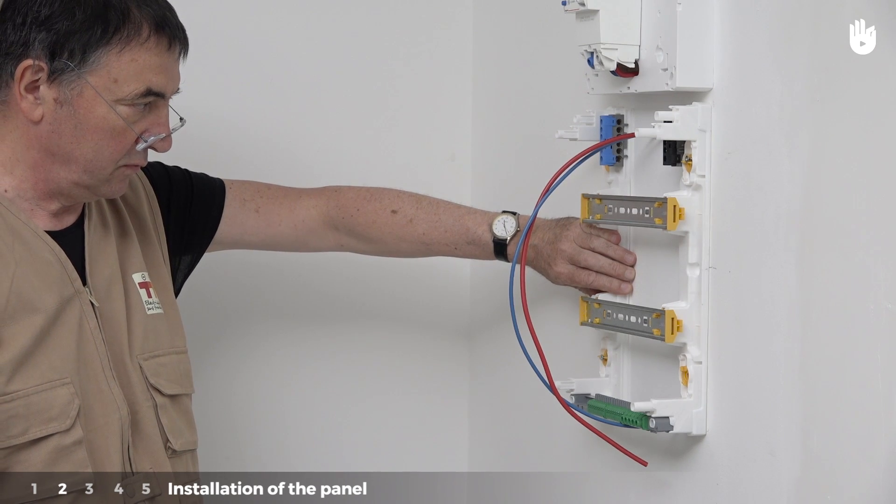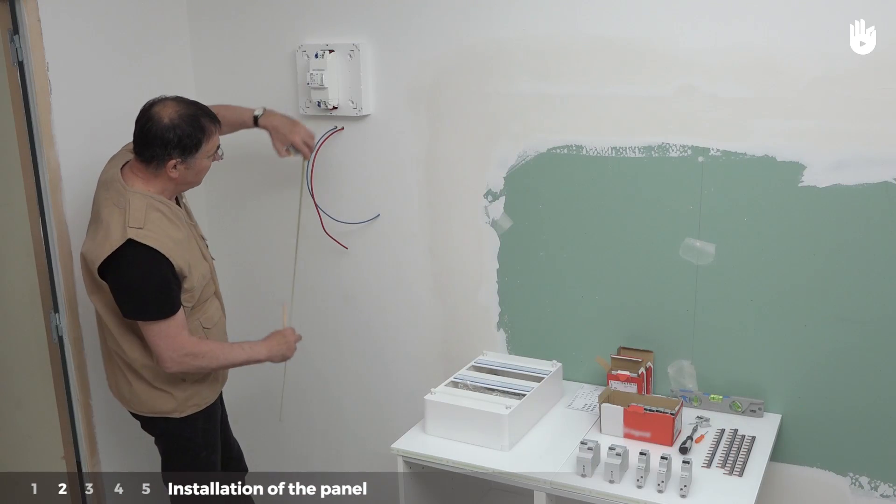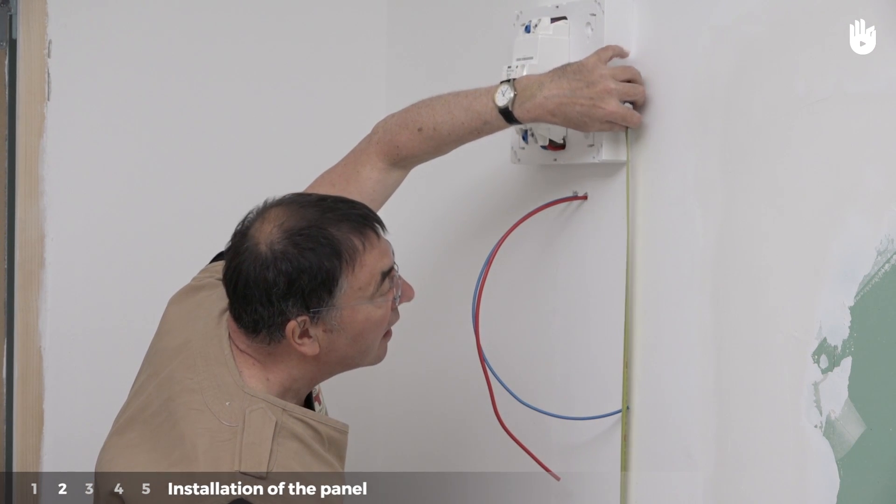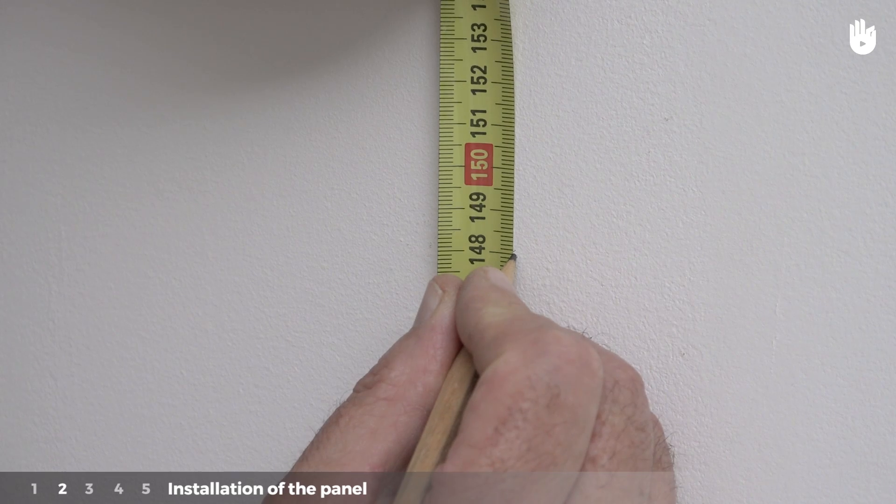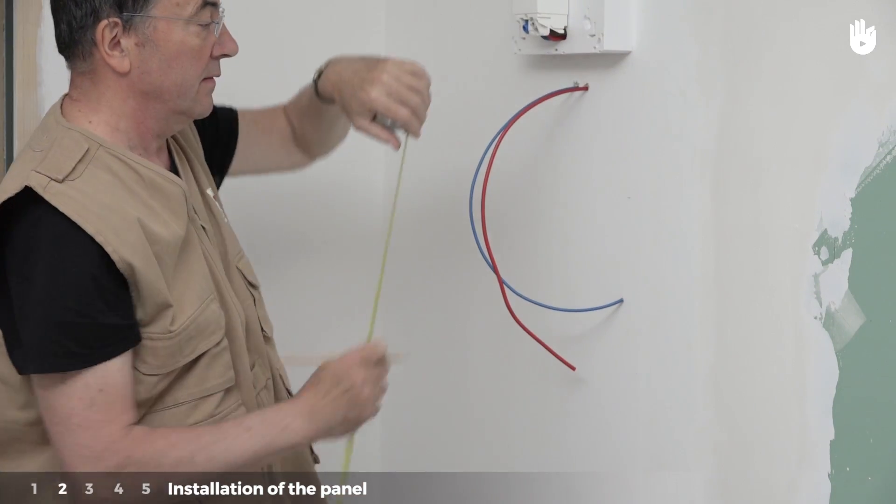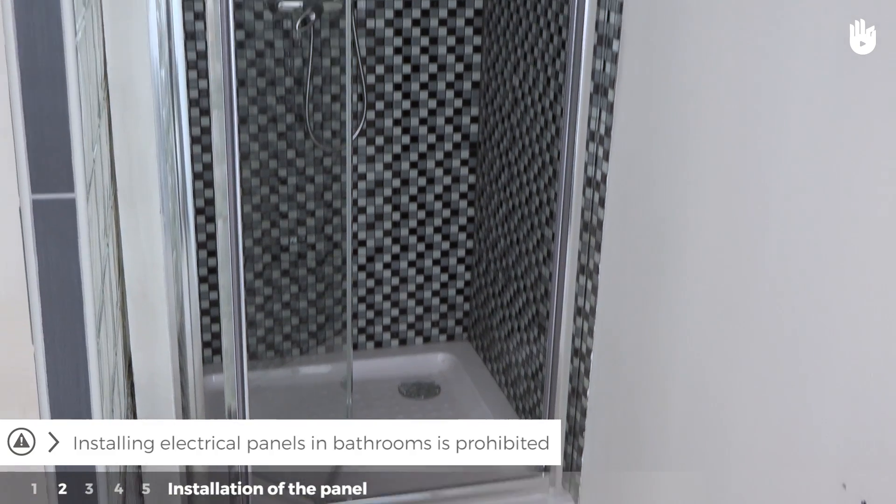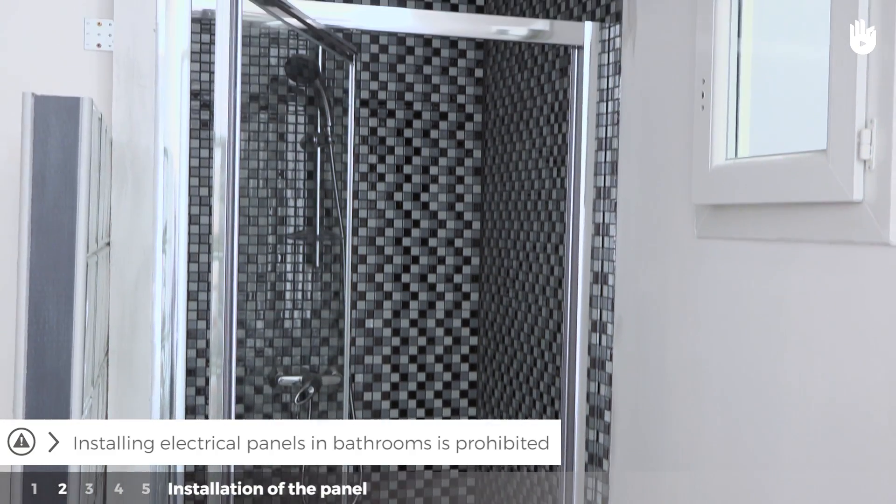Step 2. Installation of the panel. Be careful! Installing an electrical panel must be done in compliance with strict regulations. It must be installed inside the residence at a height of between 1 to 1.8 meters above floor level and must be located close to the branch circuit breaker. Please note that installing electrical panels in bathrooms is prohibited.